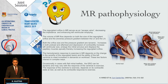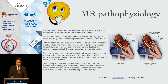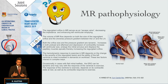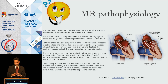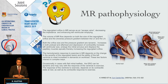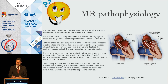So why is this? Let's go back to MR pathophysiology. The regurgitant orifice in mitral regurgitation acts as an escape valve. There are two chambers — the LA and the LV — with the MR orifice between them. The grade of the MR depends on the surface of the orifice and the gradient between these two chambers, which means the preload and the afterload.